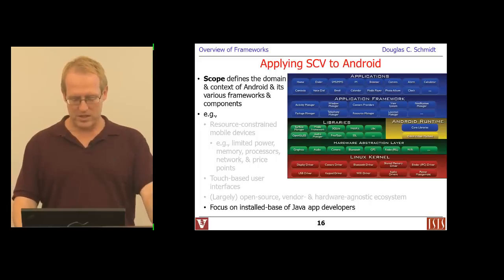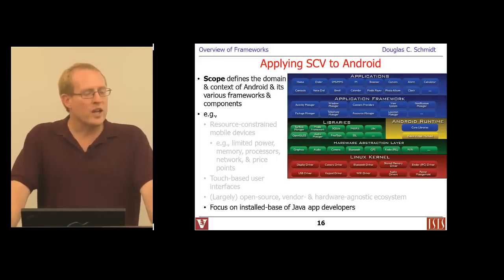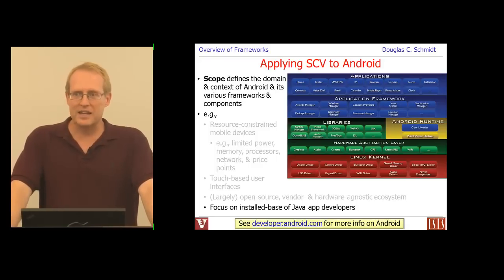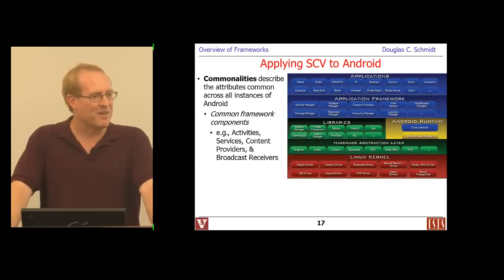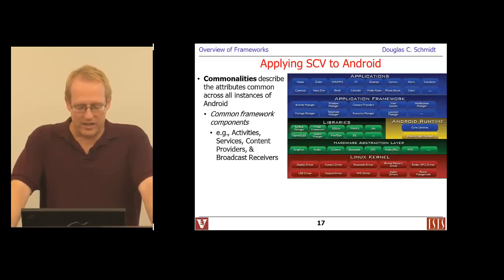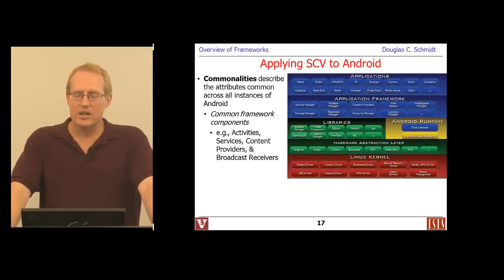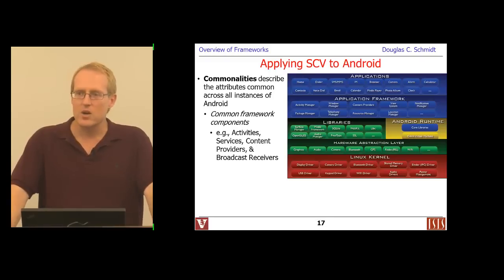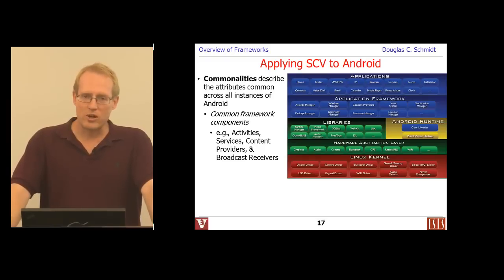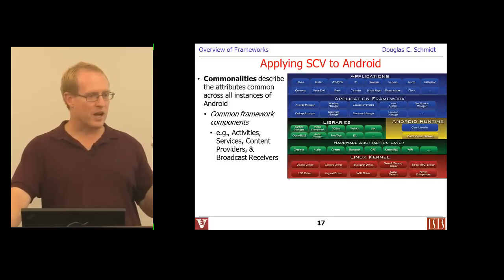What's part of the commonality? If that's the scope, the easiest way to figure out what's common is to look at the Android layer cake diagram. There are lots of common pieces throughout the Android ecosystem. Some we'll focus on in this class include services, content providers, and broadcast receivers. We'll start with activities because you need those to make sense out of user interfaces. Those are all examples of common components that are part of the core architecture in Android.